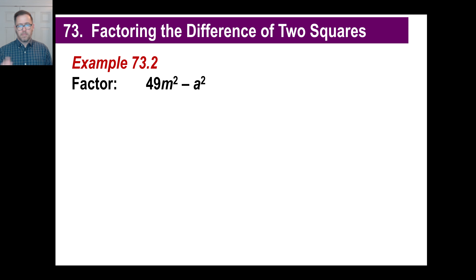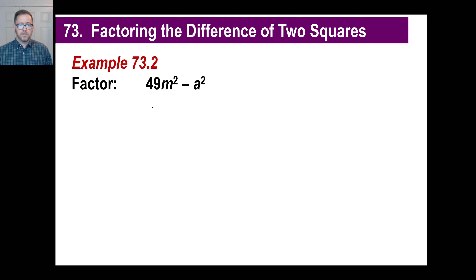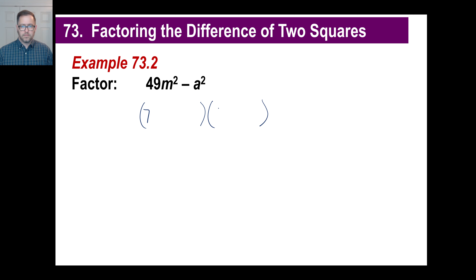Here's another one that looks funky. We have 49m² minus a². Is 49 a perfect square? Yes. Is m squared a perfect square? Yes. Is a squared a perfect square? Of course. Is there a difference? Yes. The square root of 49 is 7, the square root of m squared is m, and with a plus and a minus, the square root of a squared is a. So we factor it as (7m + a)(7m − a). That's as far as you can go.